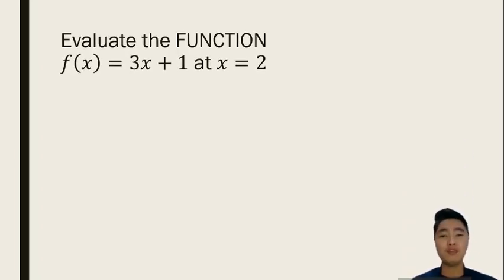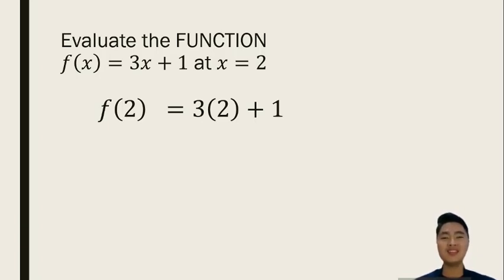For the function f equals 3x plus 1, x is given to be 2. To evaluate this function, this means that you have to replace all the x's that you can see in the function with 2. Thus, you will have f of 2 equals 3 times 2 plus 1. As you can see, the x's are missing. That is because we have replaced them with a new value which is 2.